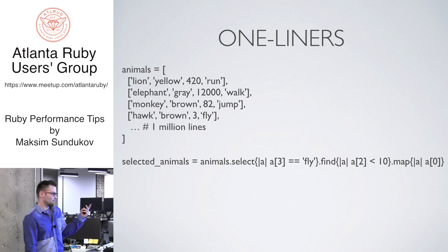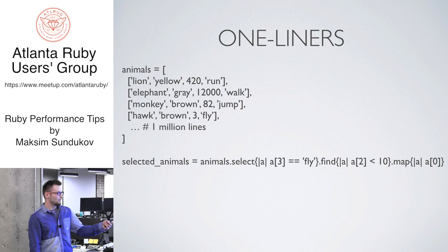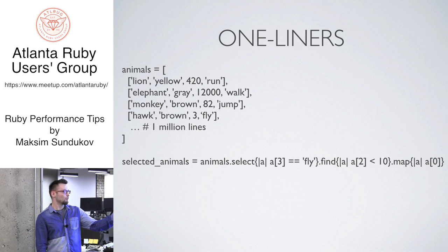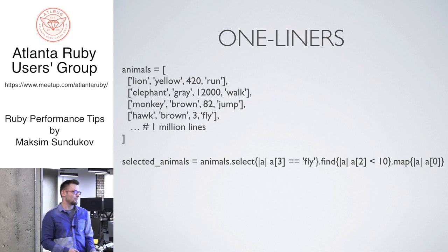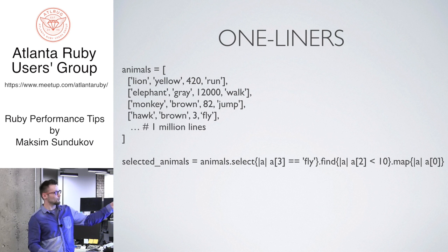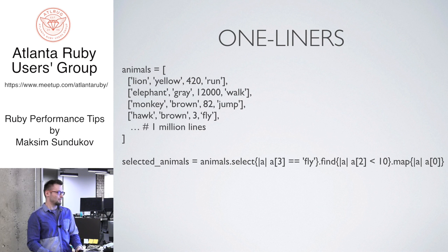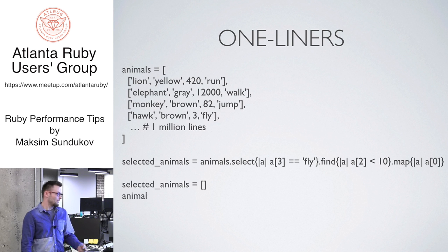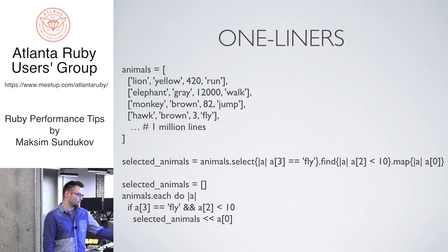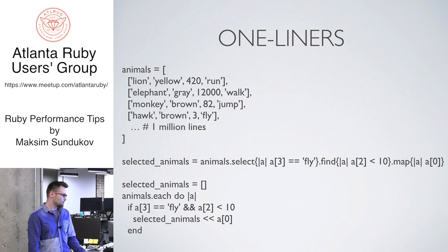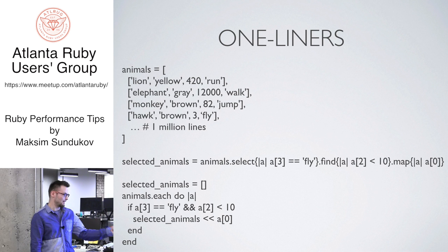But then you start thinking — it's probably going to run through all animals, run the condition that it equals fly, get that array, then run it a second time through find, and then run it a third time through map. Besides the first array, you have two more arrays in memory and you keep running through them. This is where you should start feeling that something weird is going on. It can be easily written as a simple loop where you make everything you need in one iteration — still readable, not as beautiful as a one-liner, but it actually works probably three times faster and consumes three times less memory.